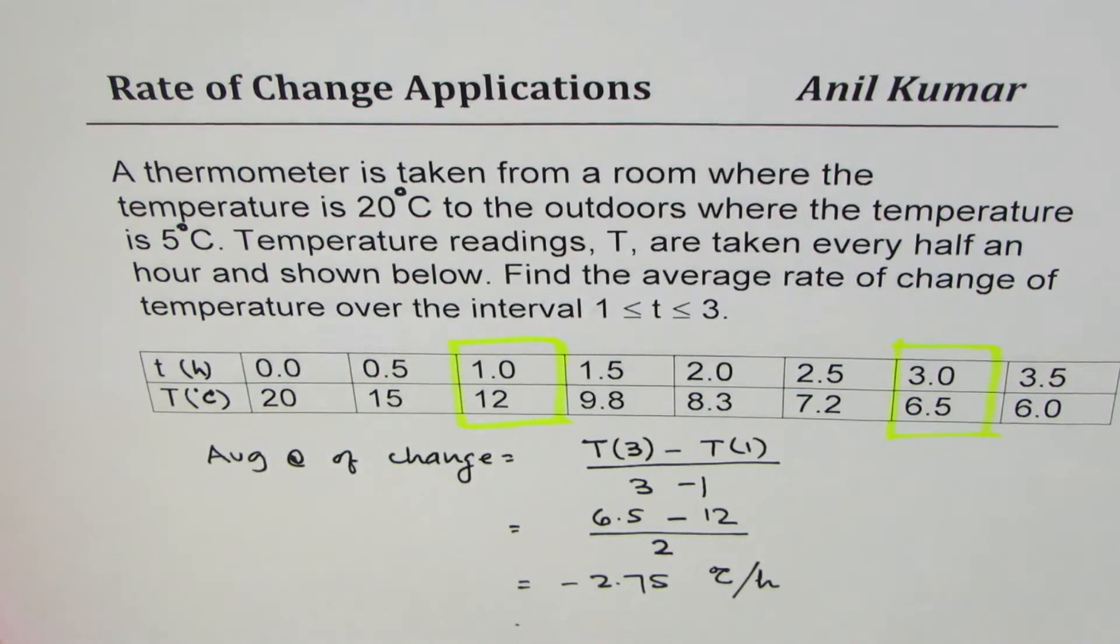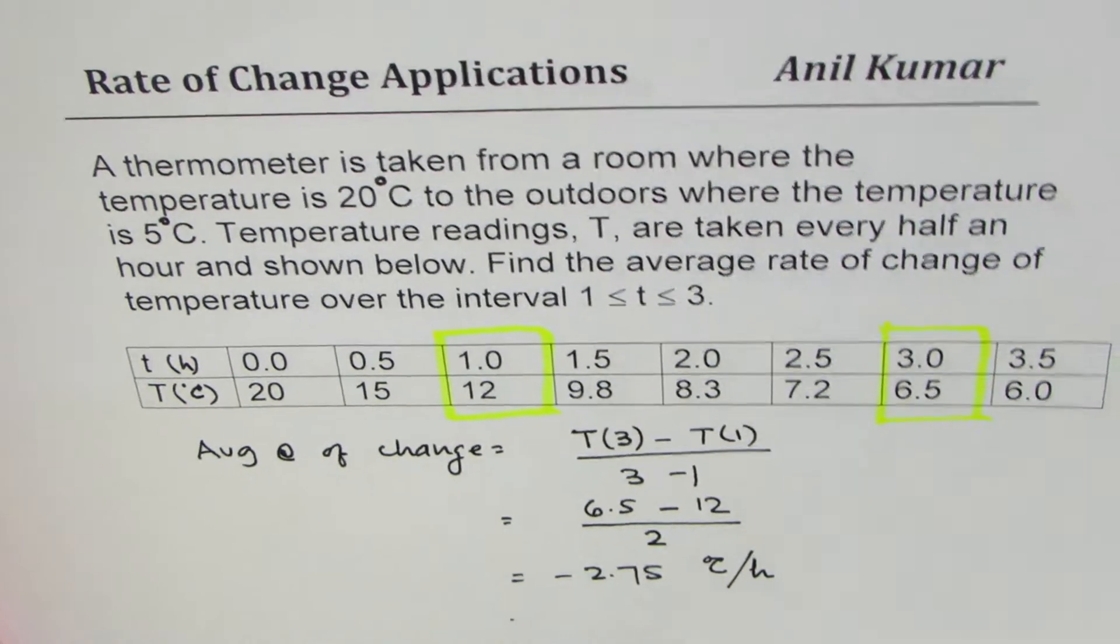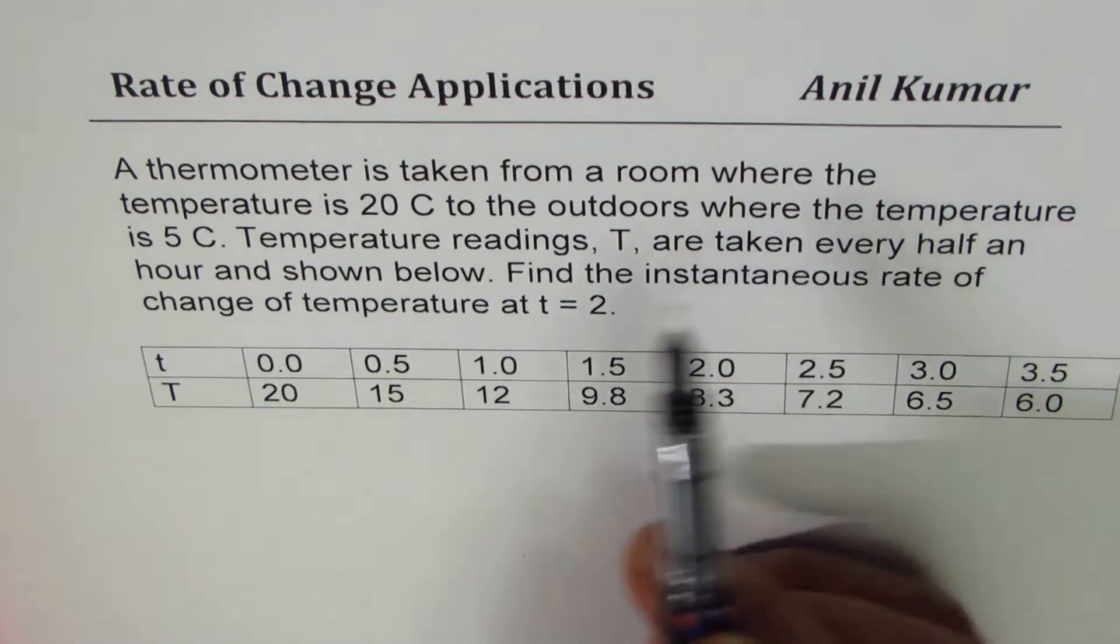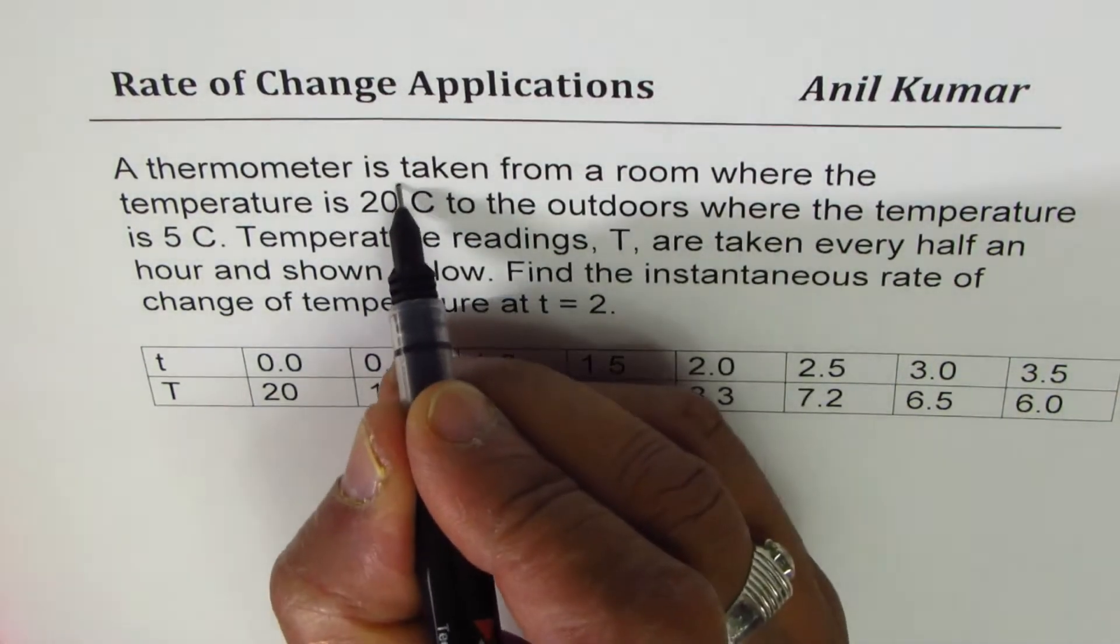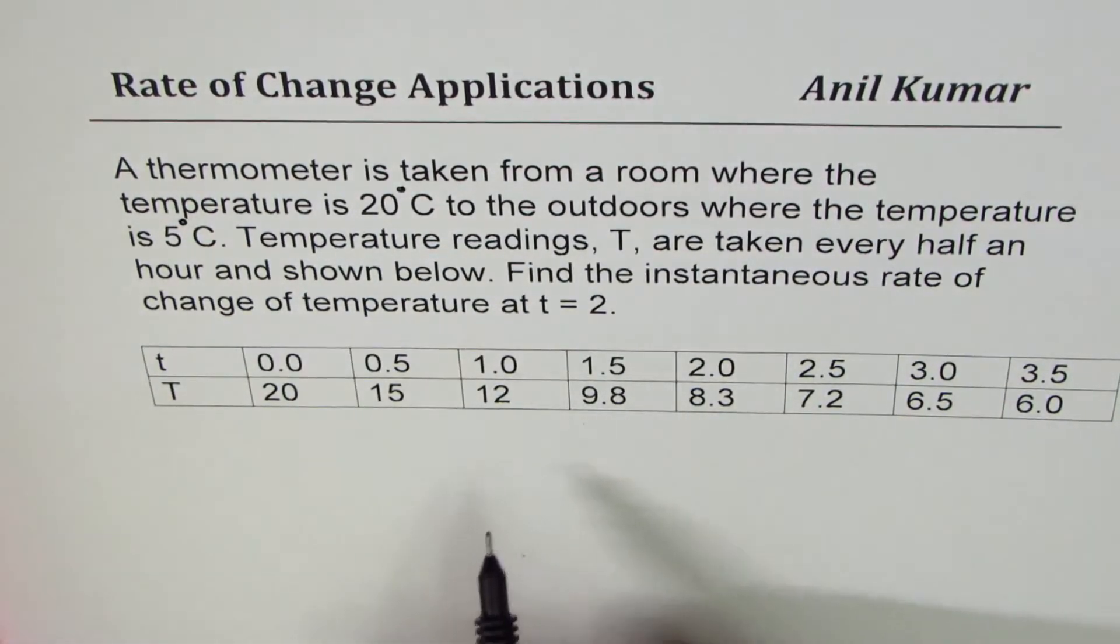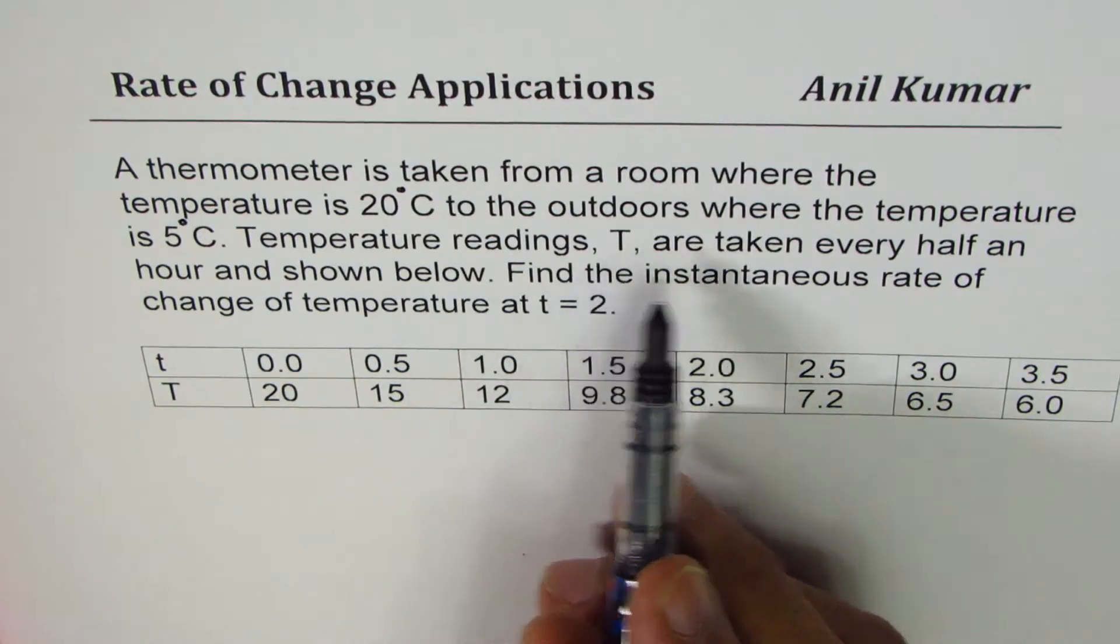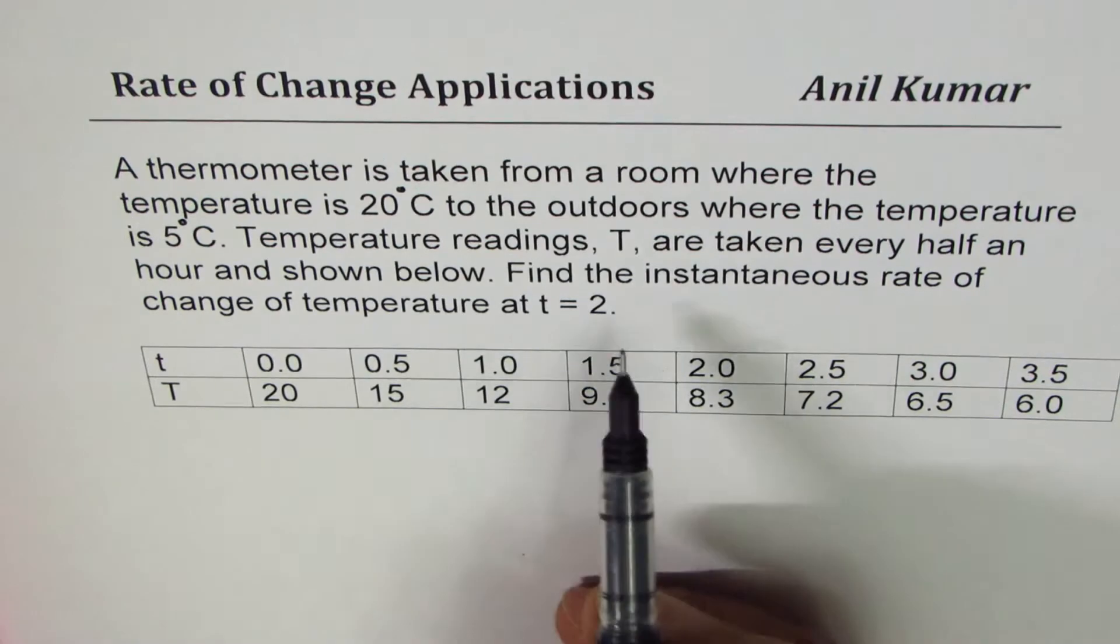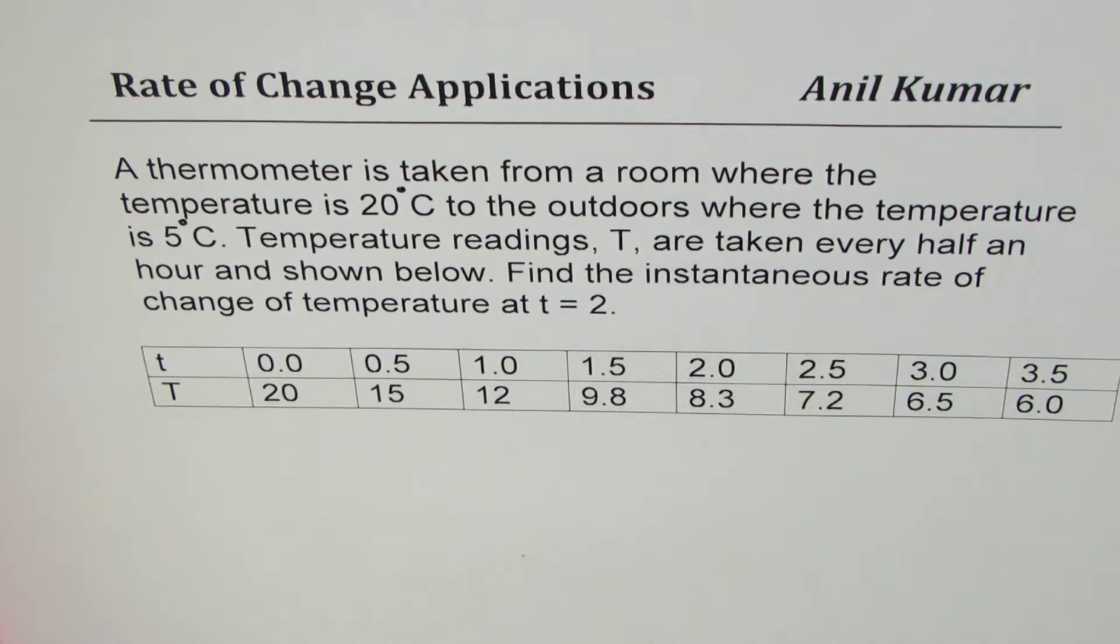Now let's do one more example based on the same data. It says a thermometer is taken from a room where the temperature is 20 degrees centigrade to the outdoors where the temperature is 5 degrees centigrade. Temperature readings t are taken every half an hour. Find the instantaneous rate of change of temperature at t equals 2.